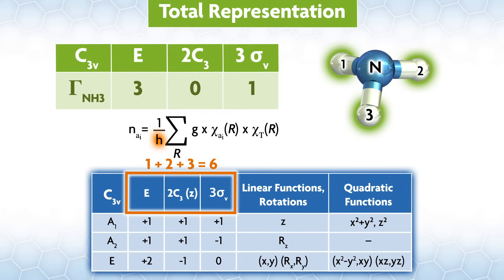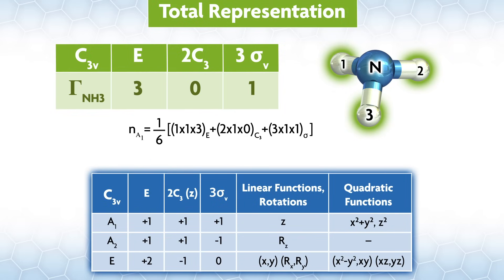Our order h is 6 because we have one identity, two C3s, and three planes of symmetry. Let's find out how many a1s are in our total rep. The sum is over all the classes, and there are three of them, E, C3, and sigma v, so we will have three terms. The g in the equation is the coefficient on each class, the number of symmetry operations.